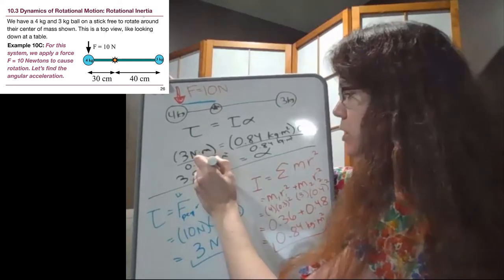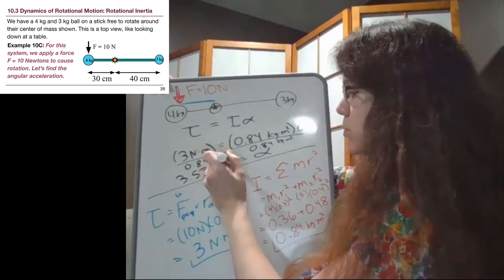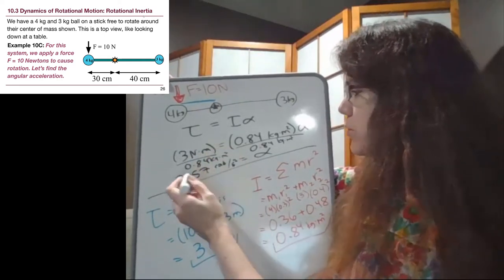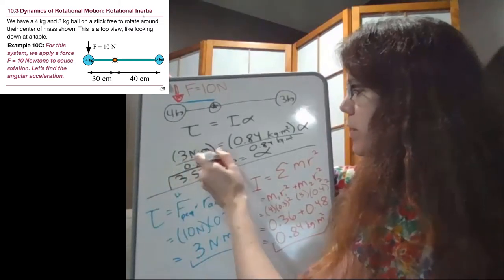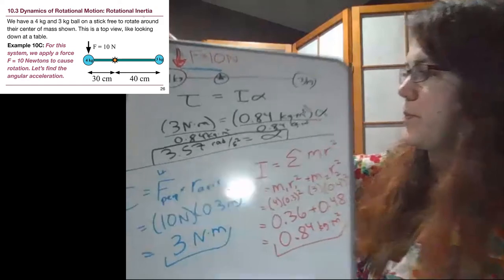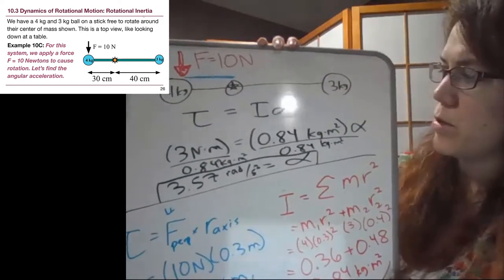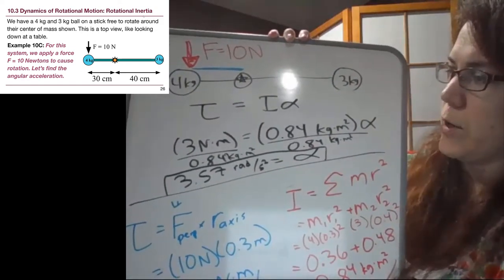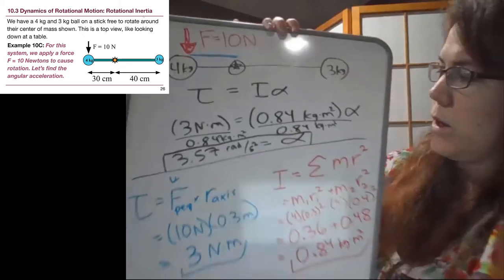What we end up with is the units that we expected, plus radians show up in their magic kind of way. And we get 3.57 radians per second squared. So that last part, I'll get a little bit closer to the video.